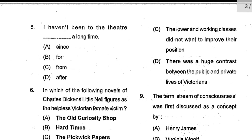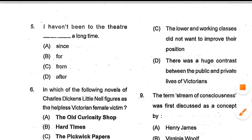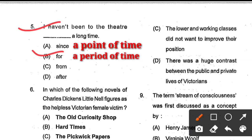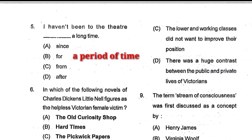Question number 5: I haven't been to the theater ___ a long time. Options: since, for, from, after. Option number B, 'for', is the correct answer. You all know that we use 'for' for a period of time and 'since' for a point of time.